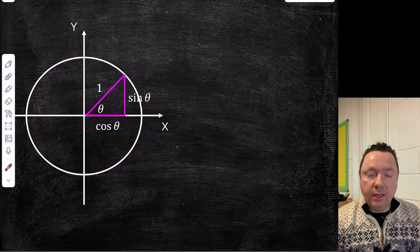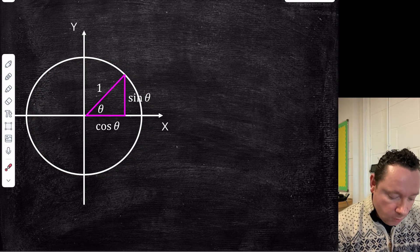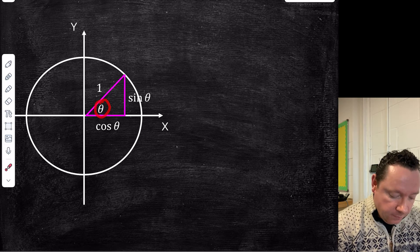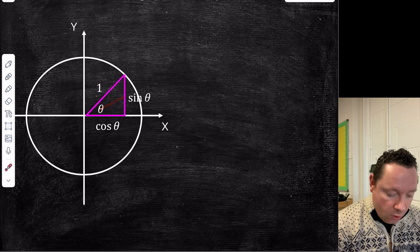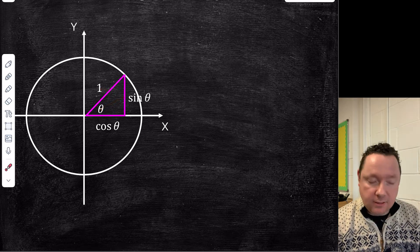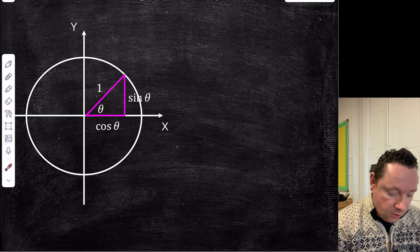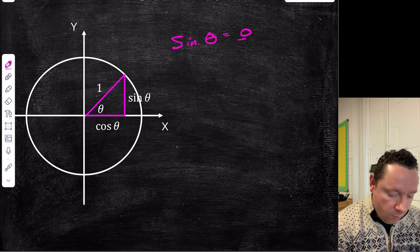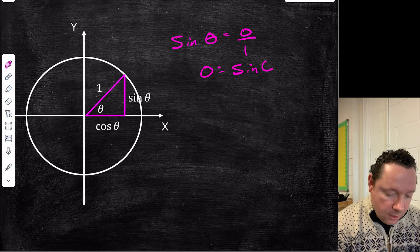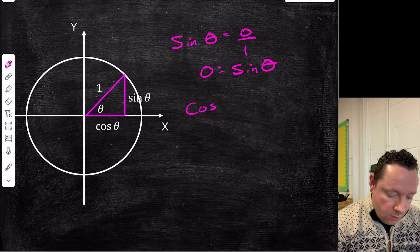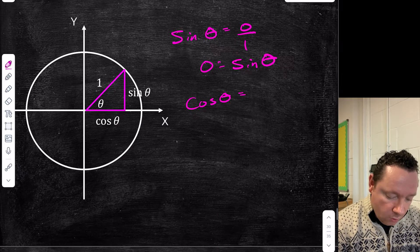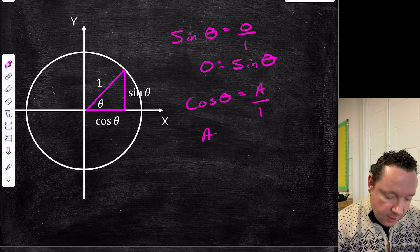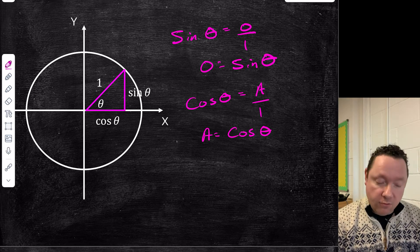If you recall from when we came up with the CAST diagram, if we call this angle theta, then opposite over hypotenuse is sine theta. So sine theta is just the height — you would write sine theta equals opposite over 1, so opposite equals sine theta. Similarly, cos theta equals adjacent over 1, so the adjacent side is cos theta. We can call the height sine theta and the length cos theta.